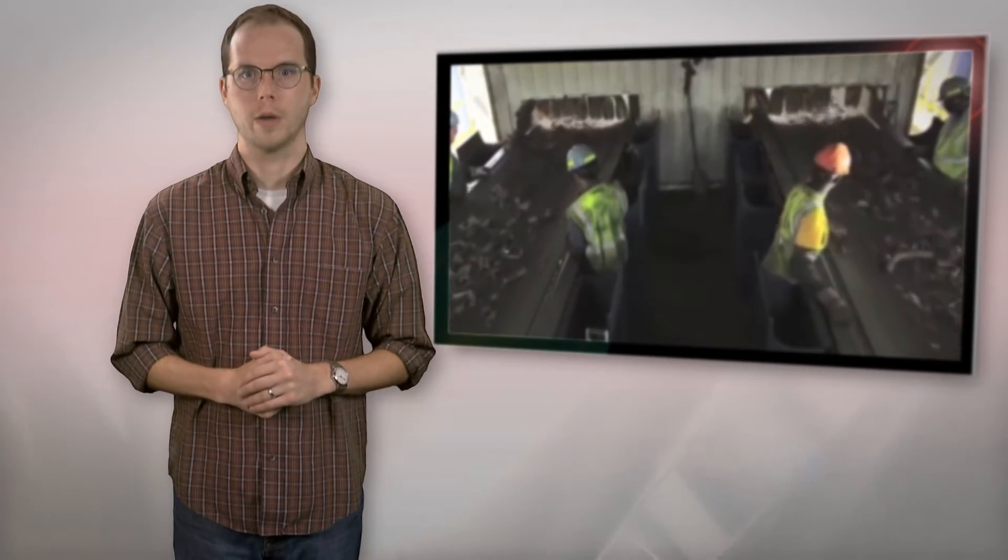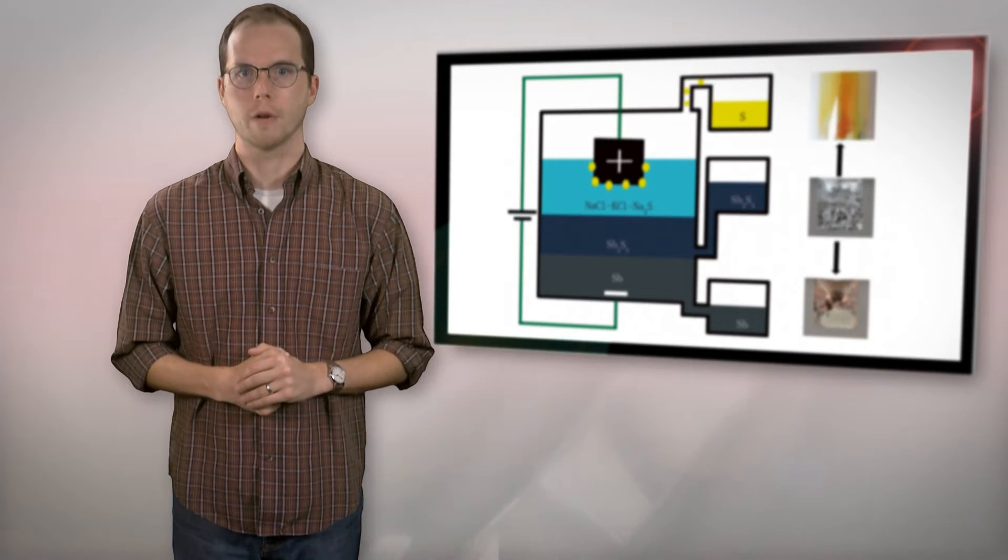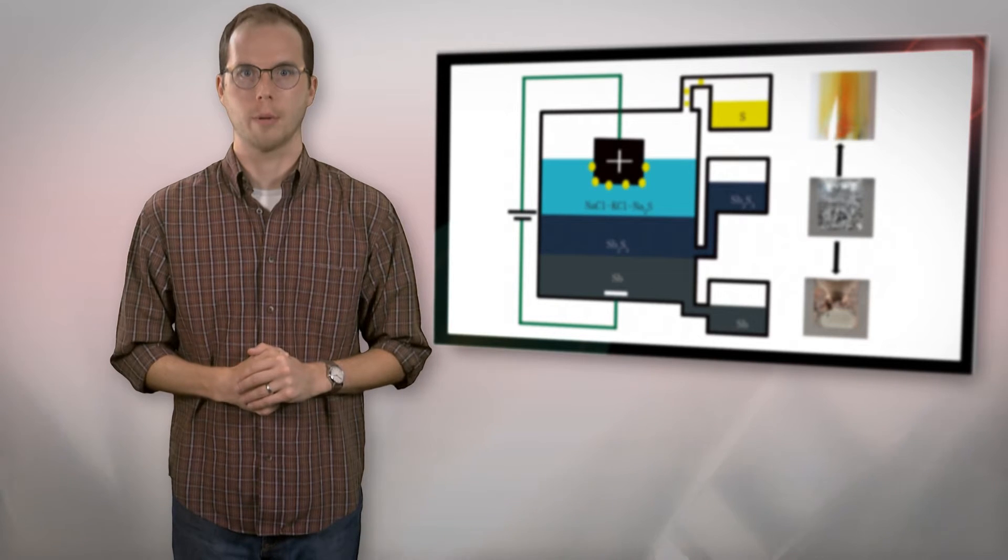Producing metals with electricity is a much more energy-efficient method for smelting than heat, which could lower costs for smelters and manufacturers alike. And whereas conventional smelting produces the air pollutant sulfur dioxide, the MIT process instead generates pure sulfur gas that could be collected and used as chemical feedstock.